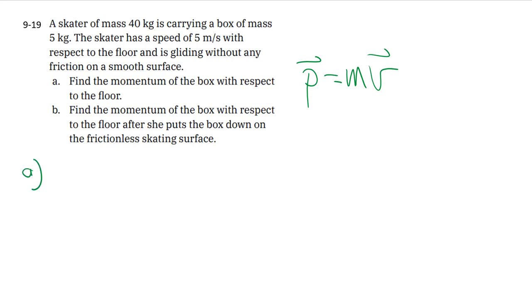Part a is pretty basic. They're just trying to find the momentum of the box with respect to the floor as it gets carried by the skater. So presumably the velocity of the box is the same as that of the skater traveling horizontally with respect to the floor.